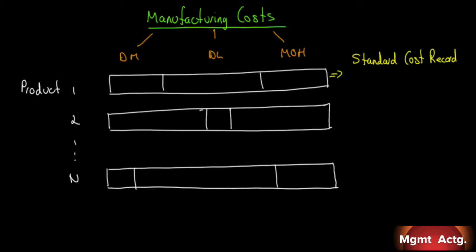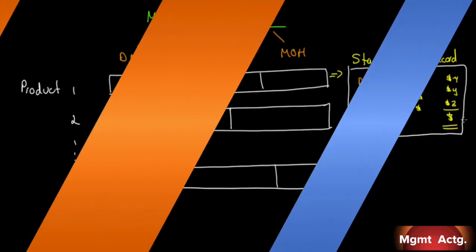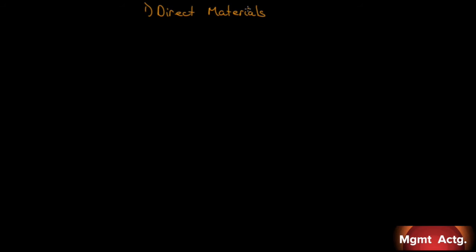The standard cost record will list for each product the direct materials, direct labor, and manufacturing overhead. It'll list the standard quantity and the standard price of each one — the standard quantity of direct materials, labor, and overhead — each priced out so that we will have a total standard price for that particular product. We can then compare that standard with actual results to isolate whether the variance is a quantity issue or a price issue.